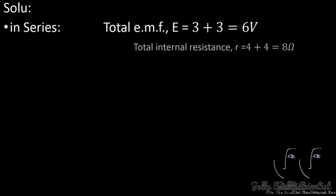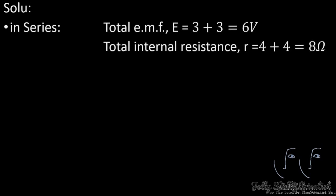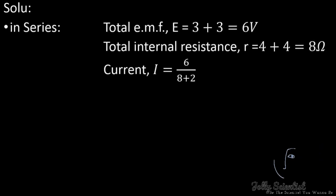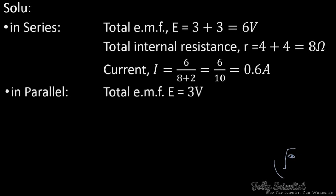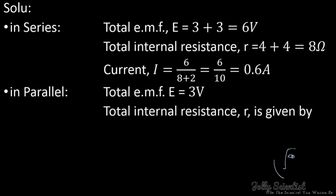Solution — in series: the total EMF equals 3 plus 3, which is 6 volts, and the total internal resistance equals 4 plus 4, which is 8Ω. The current is 6 divided by 10, giving 0.6 amps. In parallel, the EMF equals 3 volts, and the internal resistance is given by 1 over R equals 1 over 4 plus 1 over 4, giving R equals 2Ω.